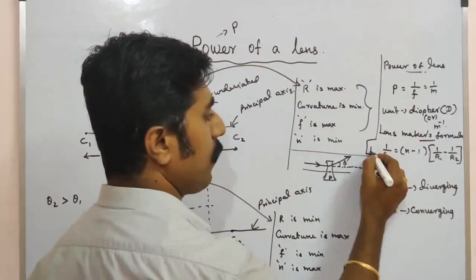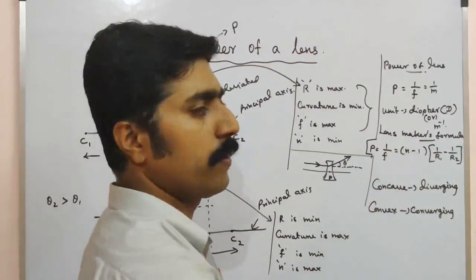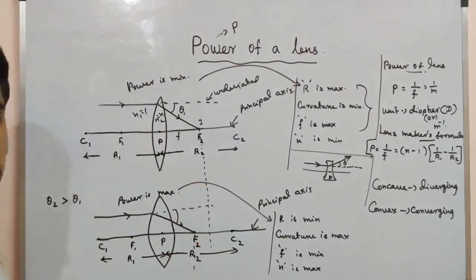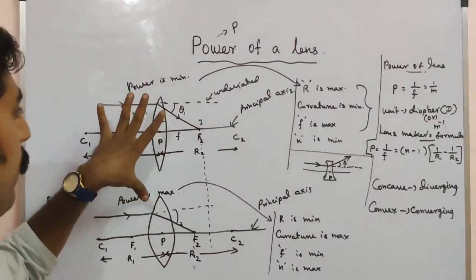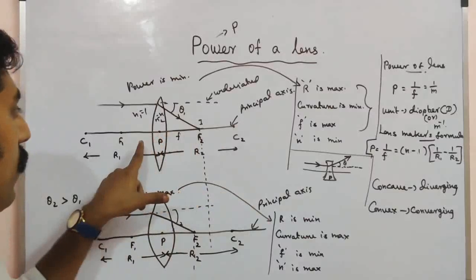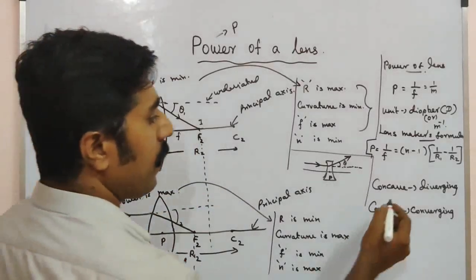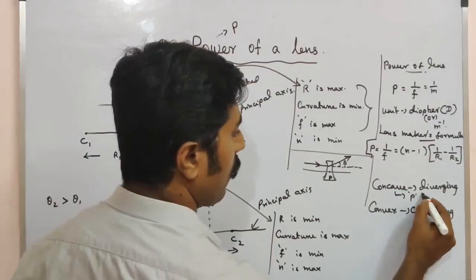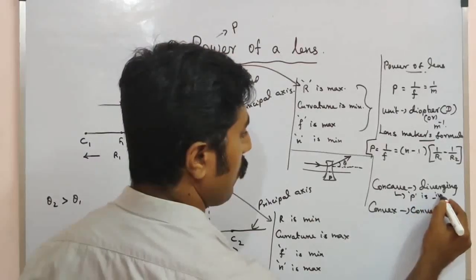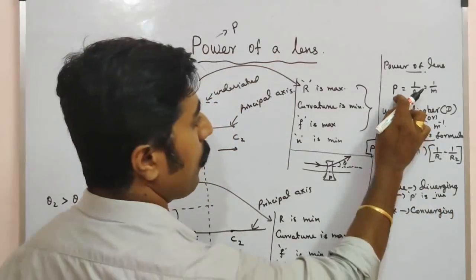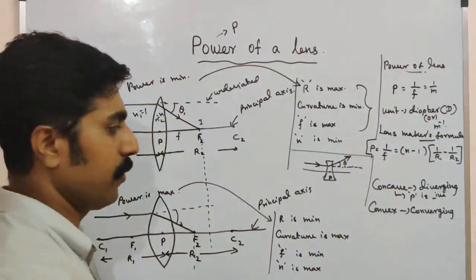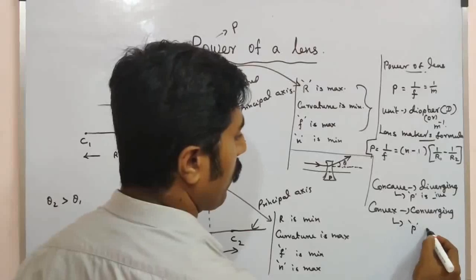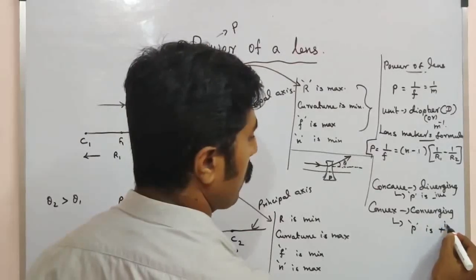The reciprocal of focal length is called the power of a lens. For a concave lens, the power is negative. For a convex lens, the focal length is positive, so the power is positive.